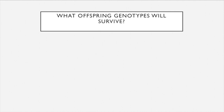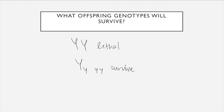Question two: what offspring genotypes will survive? Since this is a recessive lethal allele, lethality only occurs in homozygous big Y big Y genotypes — these would be lethal. That means heterozygotes and homozygous little y little y individuals will be the ones that survive.